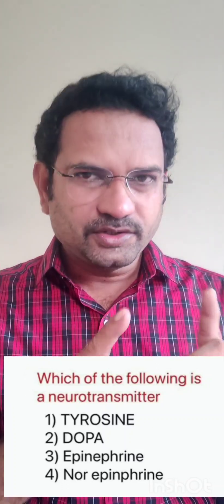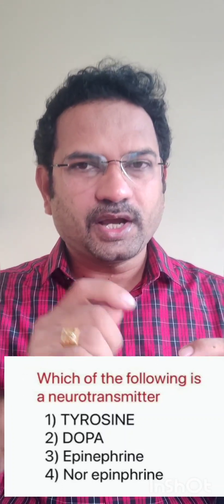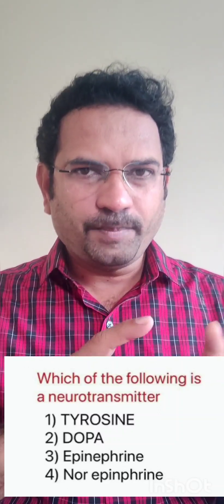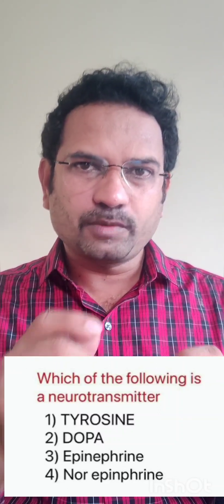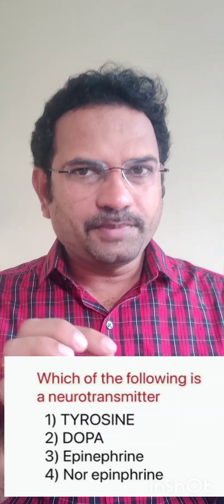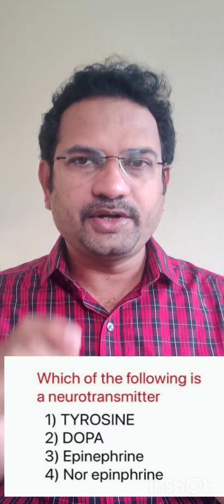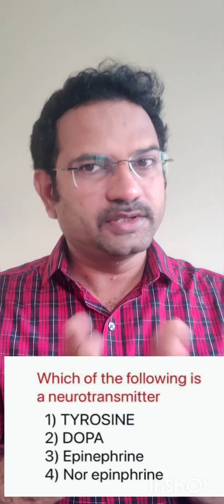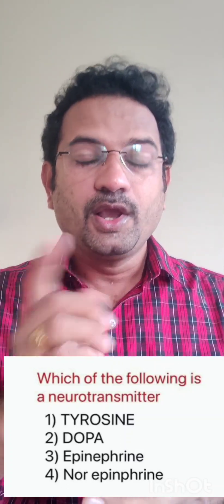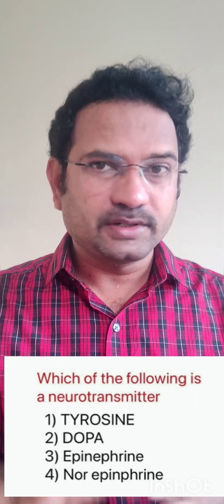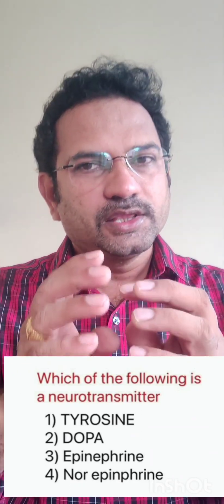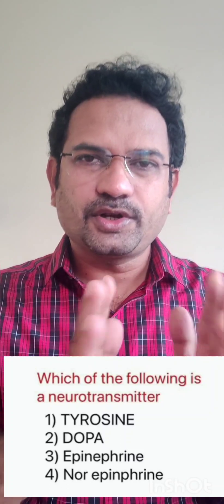Now understand the process. Tyrosine, with the help of the enzyme tyrosine hydroxylase, is converted to dopa. Dopa, with the help of dopa decarboxylase, is converted to dopamine. Dopamine, with the help of dopamine beta-hydroxylase, is converted to norepinephrine. This is the biosynthetic pathway of norepinephrine. Dopamine is also a neurotransmitter, but it is not in the options. So the answer is norepinephrine.